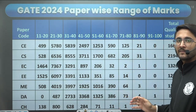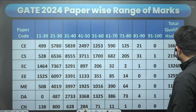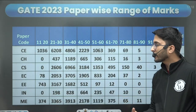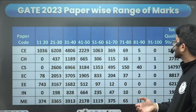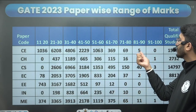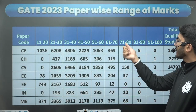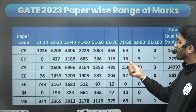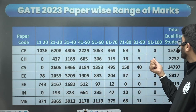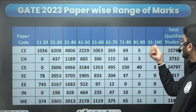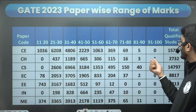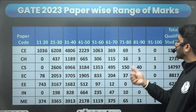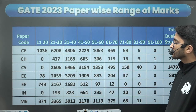Through this data you can observe the marks versus rank trend and get lots of ideas. Similarly, for GATE 2023 pattern, for Civil, 81 to 90 five students, 71 to 80 sixty-nine students. For Chemical, one student is getting marks in 91 to 100, three in 81 to 90, and sixty in 71 to 80.